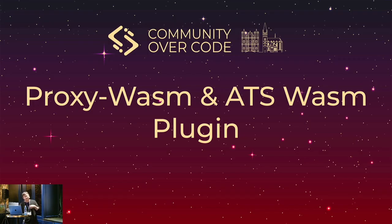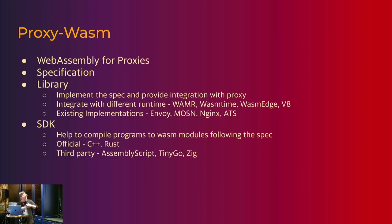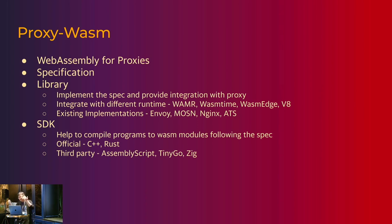We stumbled upon this thing called proxy-wasm and built a plugin on top of it. Proxy-wasm is a project that tries to provide support for WebAssembly for proxy software — it's basically a set of specifications. It comes with a library that implements the specifications and provides easier integration with proxy software and with runtimes. The most well-known existing implementation is Envoy, which is a proxy server actively used in cloud environments, where you can write extensions in WebAssembly using the same specification.